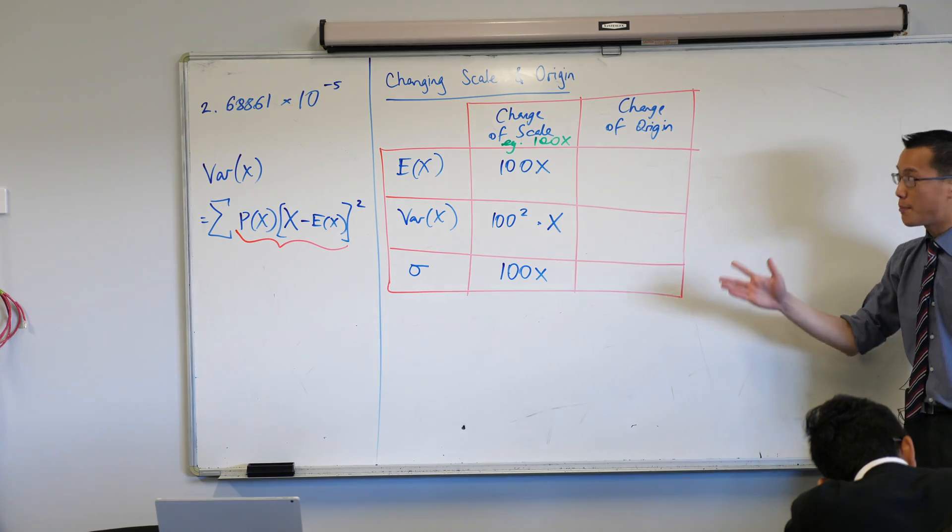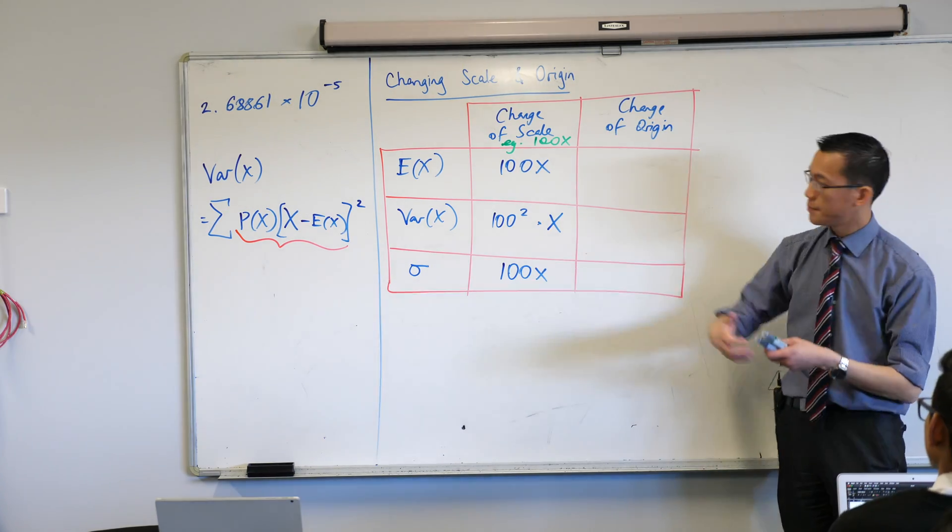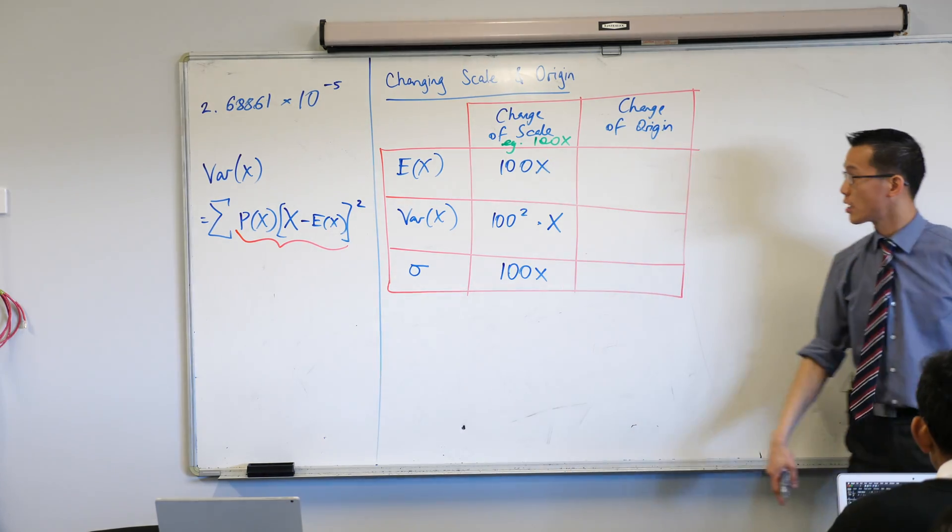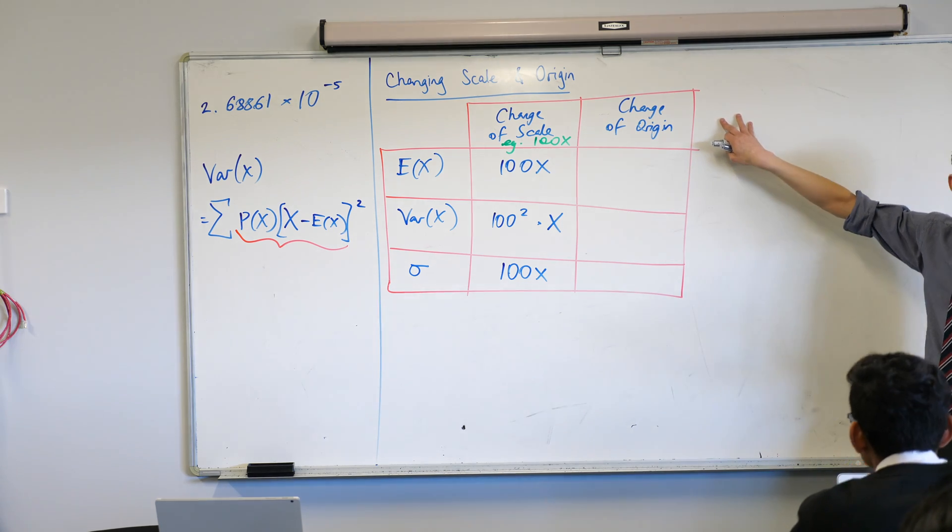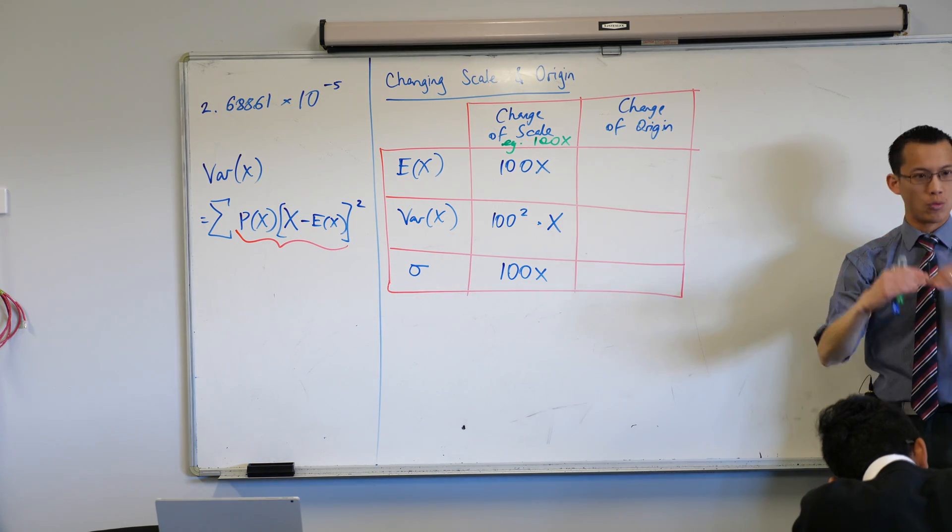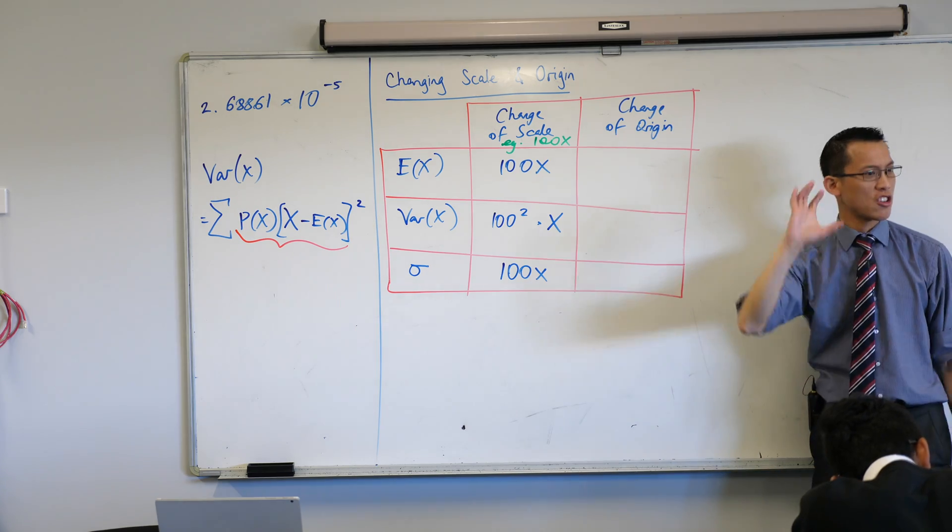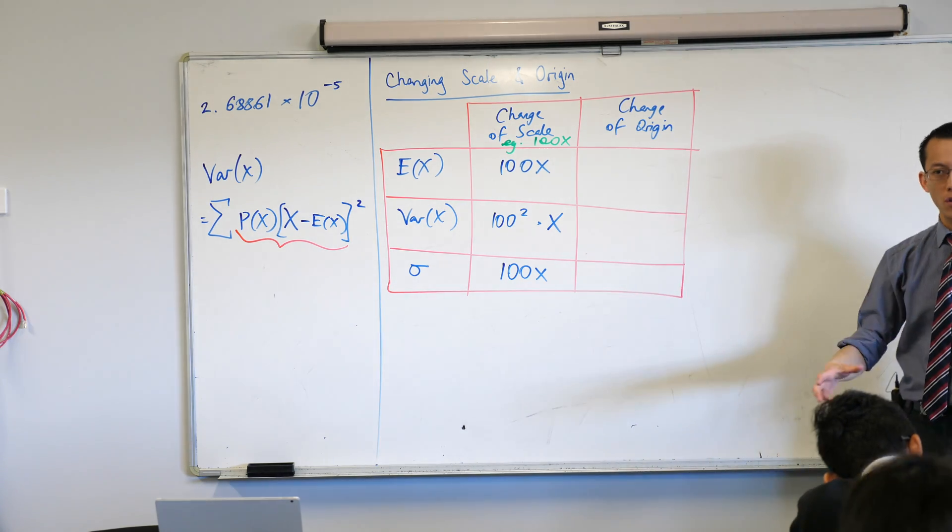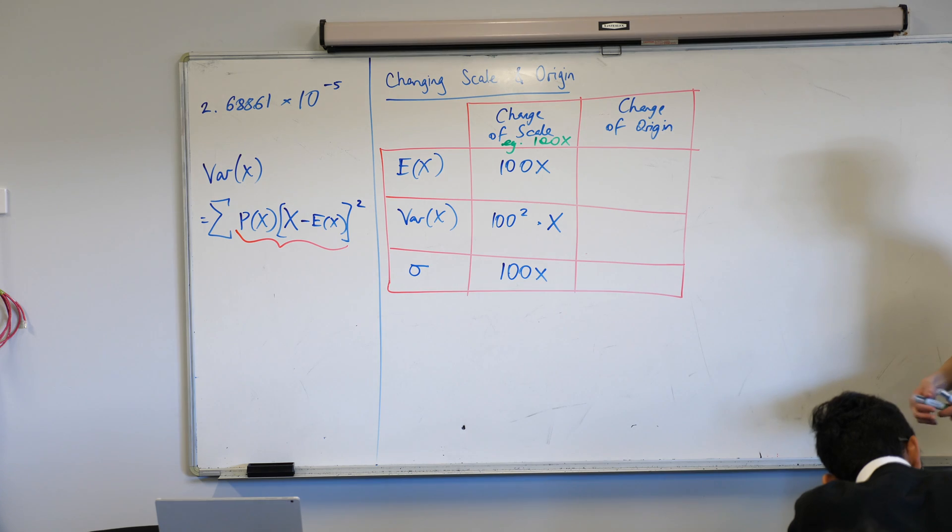Okay, so that's what happens when you make your data bigger or smaller, right? And that's just with this particular example. Then the last thing we did was, what happens if you change the origin? Where do you start measuring from? So there's some constant that you add to every score, or some constant that you subtract from every score.